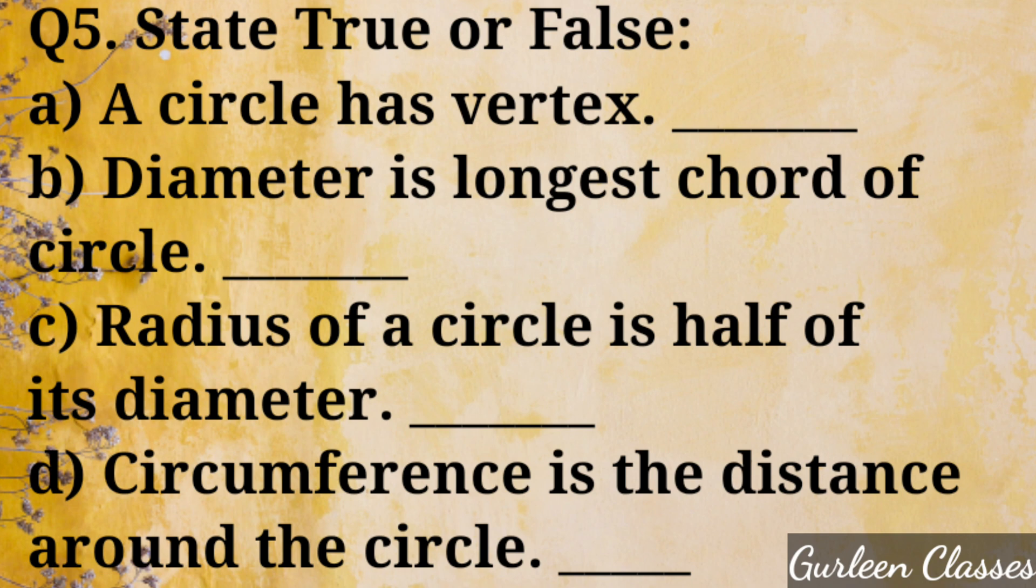Question 5. Say it true or false. A part. A circle has vertex. False. A circle has no vertex. B part. Diameter is longest chord of circle. True. Radius of a circle is half of its diameter. True. Circumference is a distance around the circle. True.